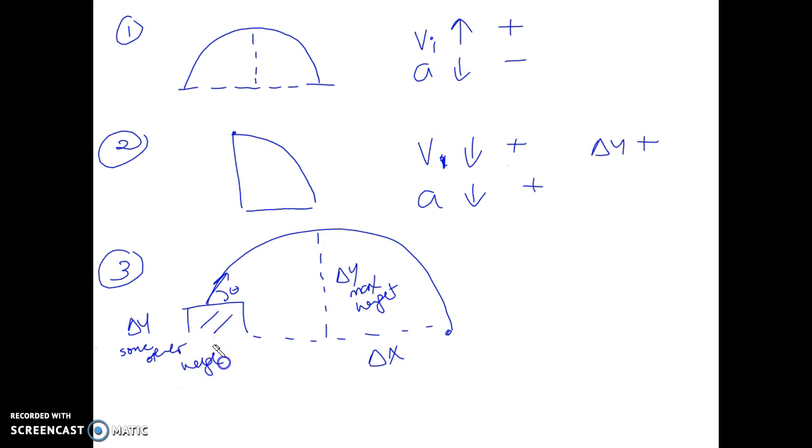Now every time we do this question, this height delta y will always be negative. See here again, velocity is going up and positive, acceleration is going down and negative, and delta y is negative. This delta y right here is the height that we start from.